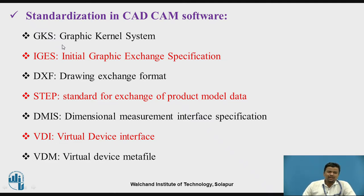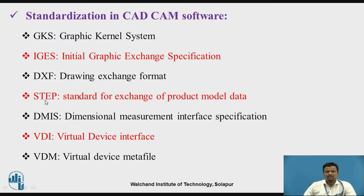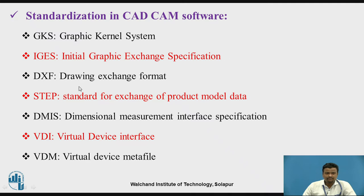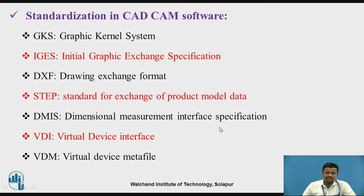There are different types of data exchange formats in the standardization process. The basic ones we are learning include: the Graphic Kernel System (GKS); IGES, which is very famous — that is Initial Graphics Exchange Specification; DXF, which is the drawing exchange format; and STEP, which is the Standard for the Exchange of Product Model Data. There is also DMIS — Dimensional Measurement Interface Specification.